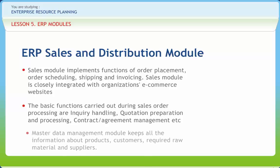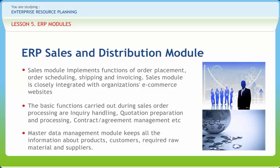Master Data Management module keeps all the information about products, customers, required raw material, and suppliers. This information is made available to decision makers whenever required. Order Management module includes two subsystems: sales order management and purchase order management. Sales Order Management focuses on meeting customers' requirements for a product or service, while purchase order management is one of the most important systems in today's competitive business environment.